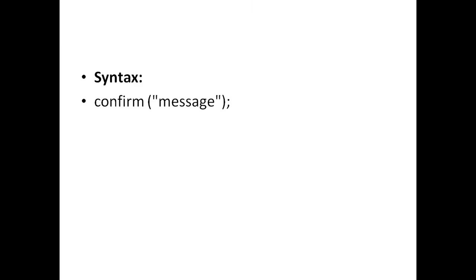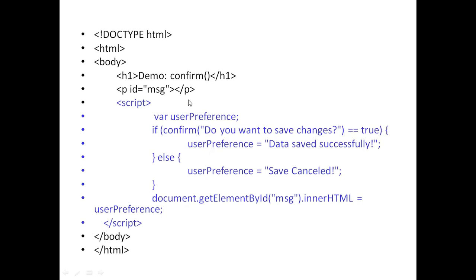The general syntax is: confirm('message'). Here an HTML document is written where we use the confirm dialog box. In the if statement, confirm is used with 'Do you want to save the changes?' equal to true. It will set the user reference equal to 'Data saved successfully', else it will show 'Saved cancelled'. When we execute this script and click OK, it will display 'Data saved successfully'.